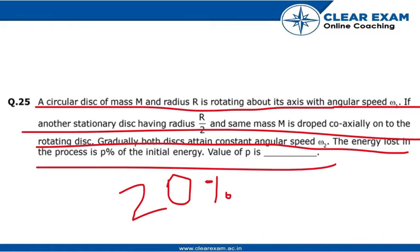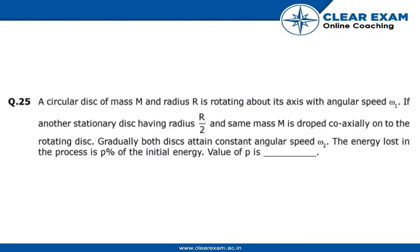So now let's check the solution. We know by formula that I omega equals MR square by 2. Now the final I equals to MR square by 2 plus M times R by 2 whole square upon 2, which equals 5 by 8 MR square.